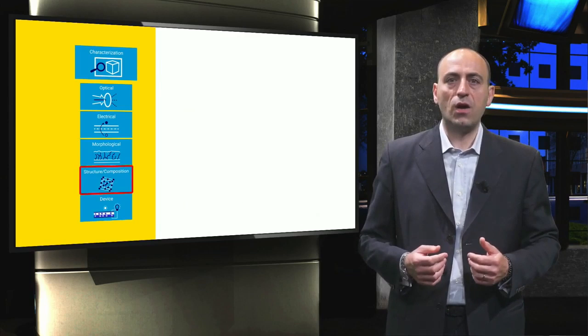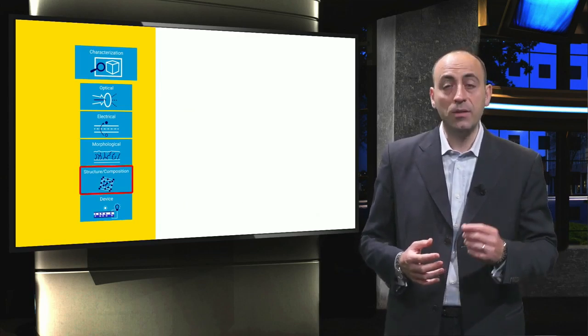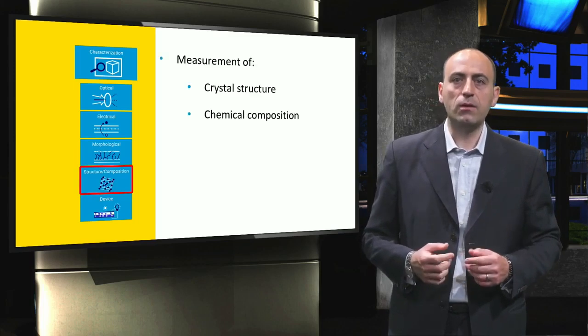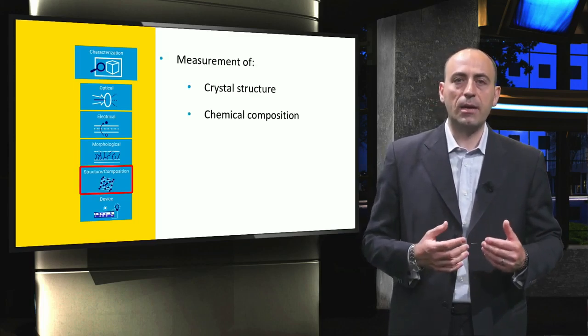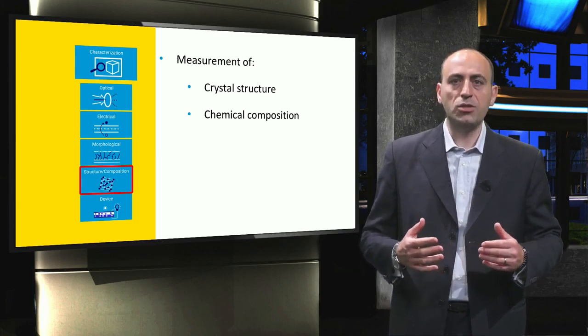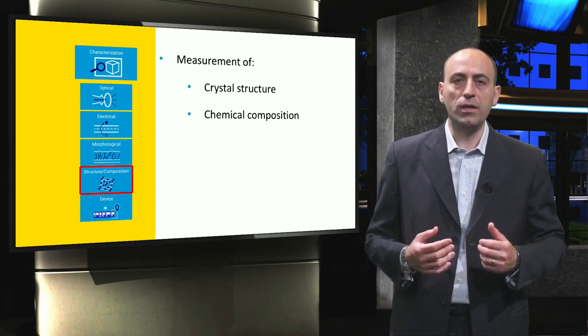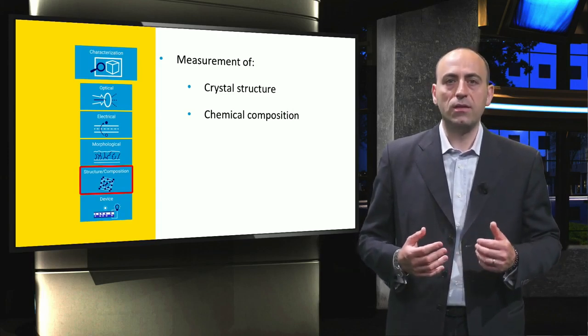The characterization of structure and composition gives information on a material at the atomistic level. In particular, the crystal structure and the chemical composition of materials can be determined. This information can be useful for some types of simulations, like ab initio modeling, based on the density functional theory.